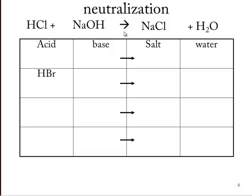Let's do one. HBr — that's hydrobromic acid — combines with NaOH, that's sodium hydroxide. Recognize that polyatomic ion OH⁻ as the hydroxide anion. So it'll make a salt; in this case, sodium bromide. And water is always just water.